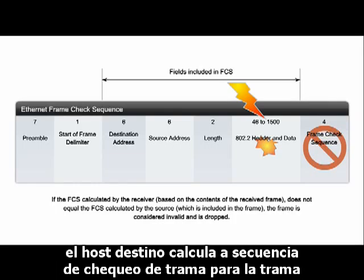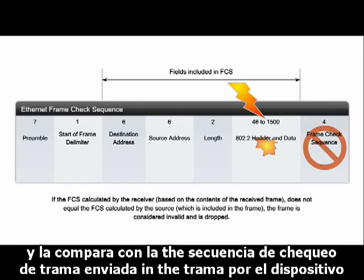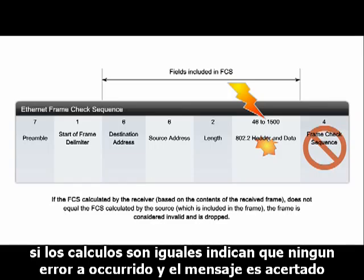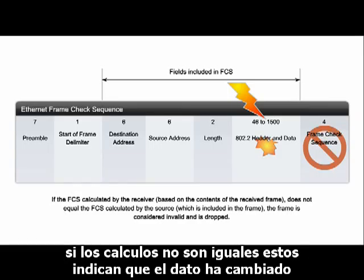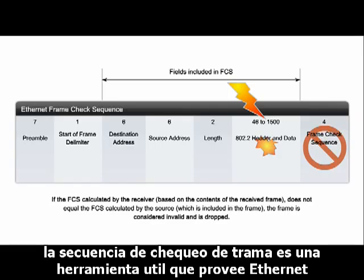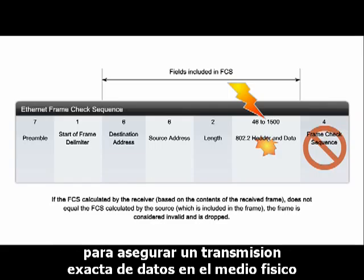The destination host calculates a frame check sequence for the frame and compares it to the frame check sequence sent in the frame by the source device. If the calculations match, no error has occurred and the message is a success. Calculations that do not match are an indication that the data has changed; therefore the frame is dropped. The frame check sequence is a useful tool provided by Ethernet to ensure accurate transmission of data across the physical media.